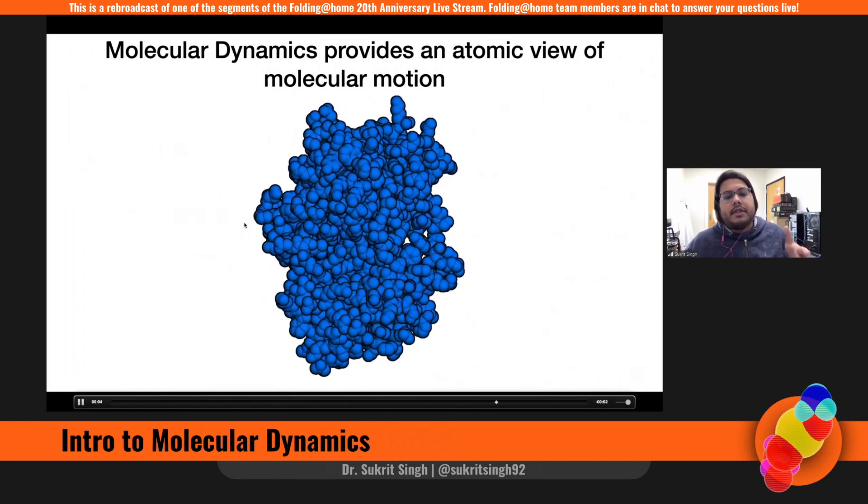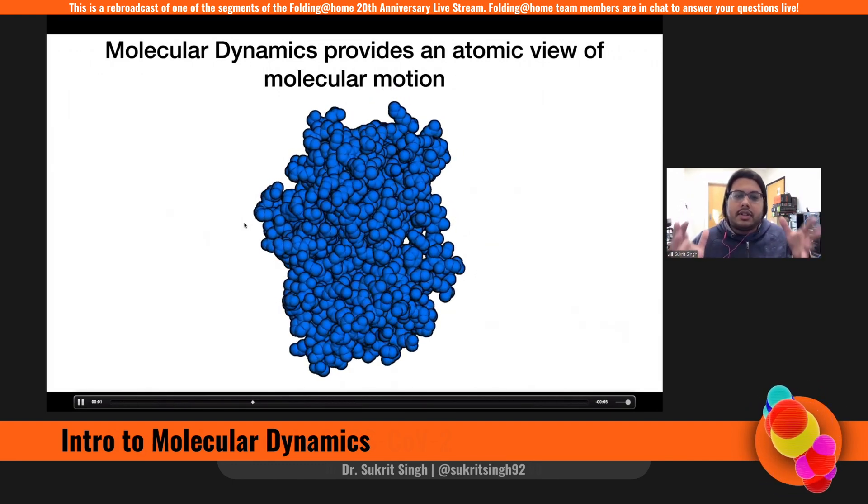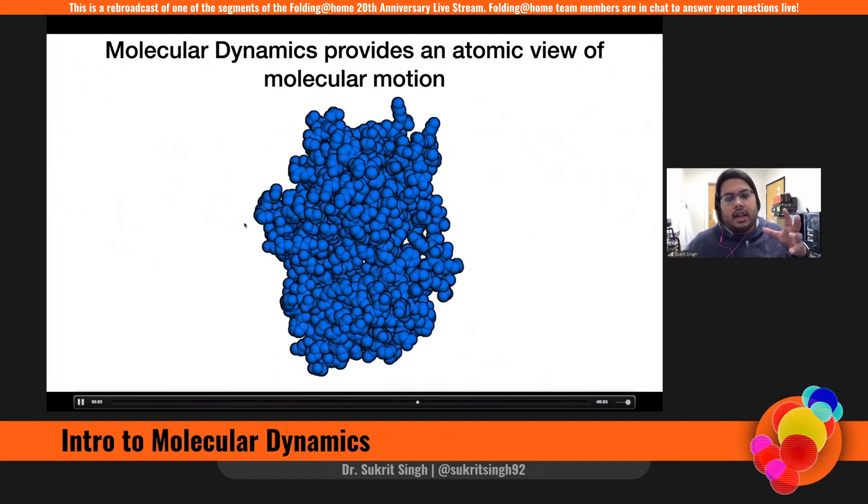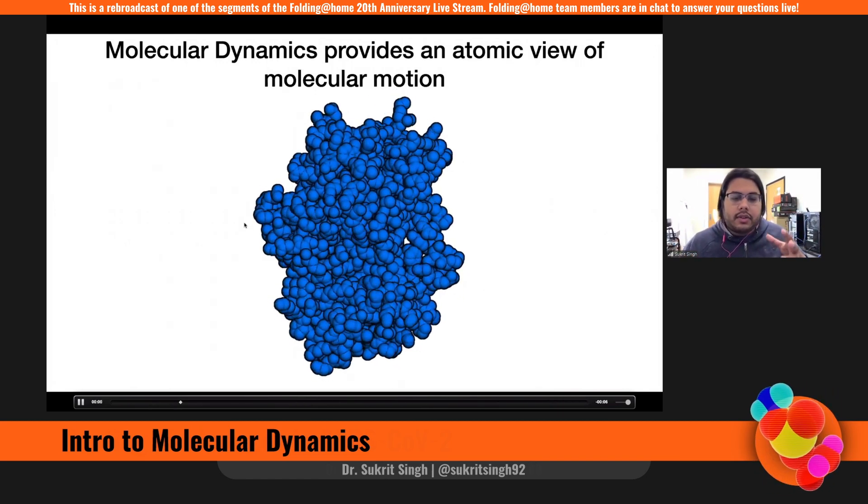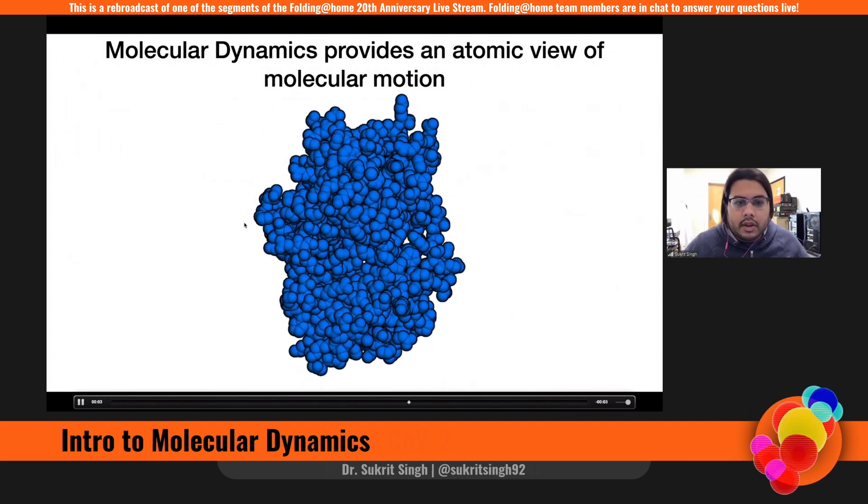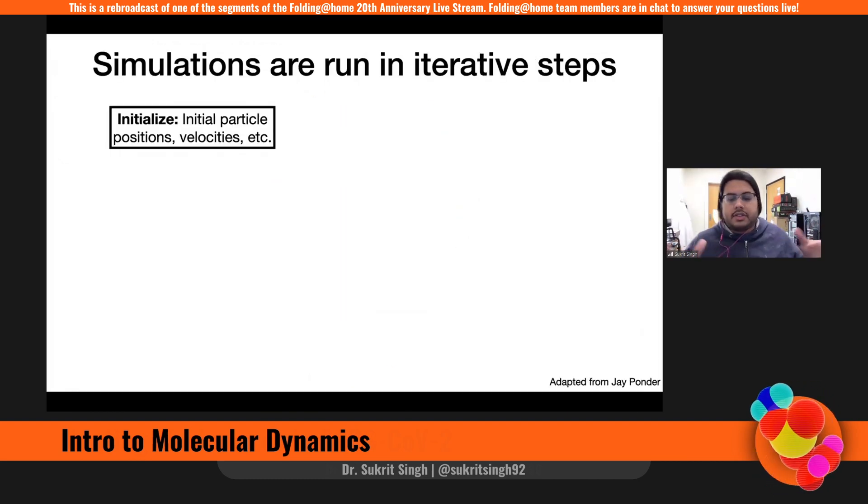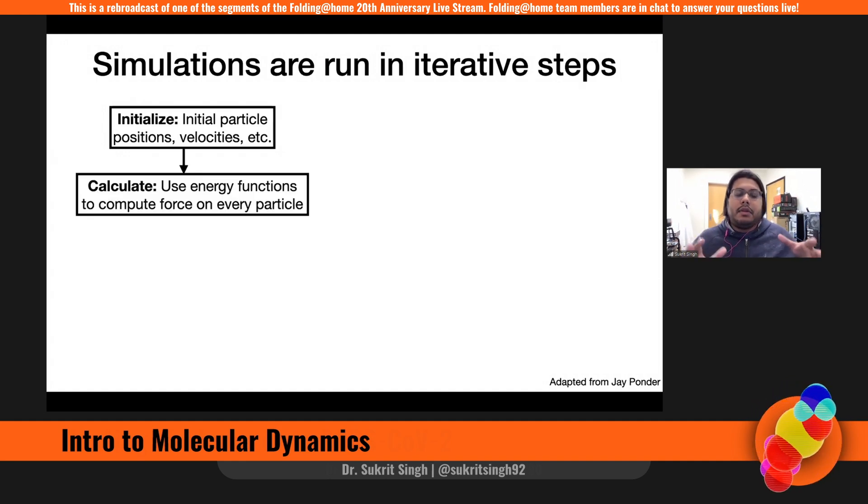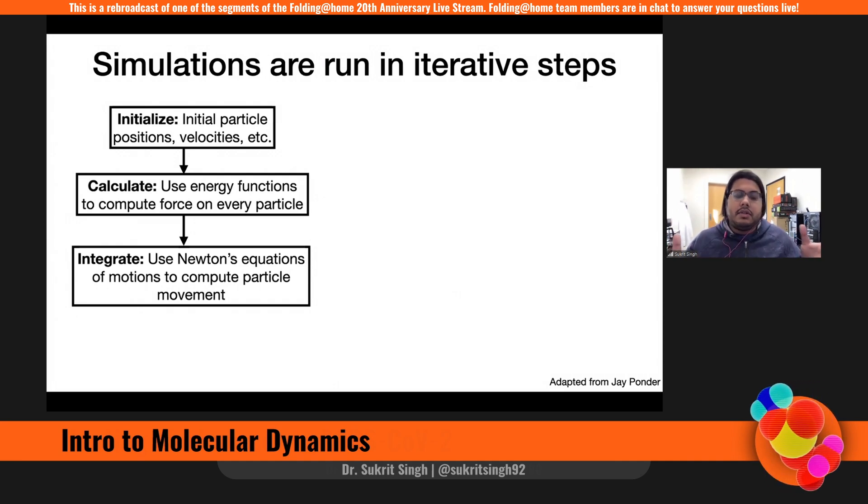So how do these simulations run? And it's important to note that these simulations are in fact what constitute a work unit of Folding at Home. And so these simulations are run in iterative steps where in a simplified view, we start off with some initial set of atoms, like the starting picture that I showed. And from those initial positions and maybe some velocities that we assign them, we compute the energy to compute the force. So we use these energy functions that John briefly mentioned as well to compute the force on every atom. And from here, we integrate using Newton's equations of motion.